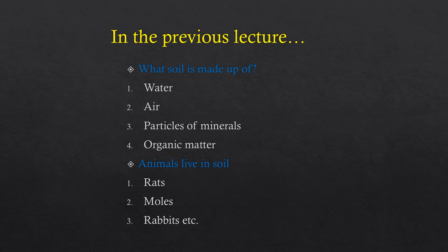What we discussed in the previous lecture was what soil is made of. We have seen that soil is made of 4 different things: water, air, particles of minerals, and organic matter. Organic matter refers to dead plants and animals — these are what soil is made of.